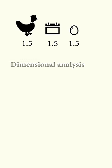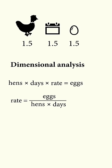You need to solve this problem by dimensional analysis. The number of hens by the number of days multiplied by the rate is equal to the number of eggs. This means the rate is equal to the number of eggs divided by the number of hens times days.